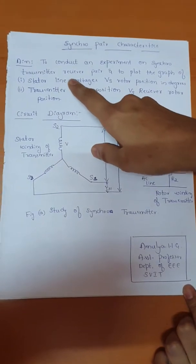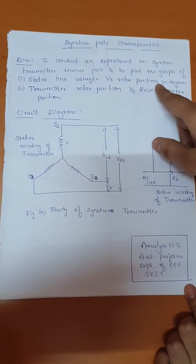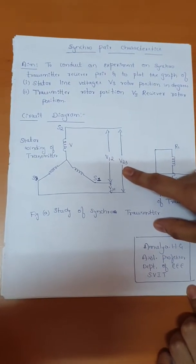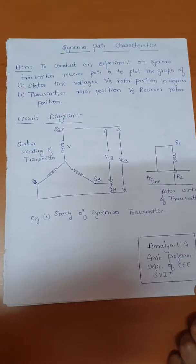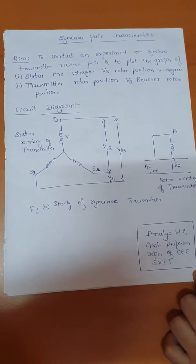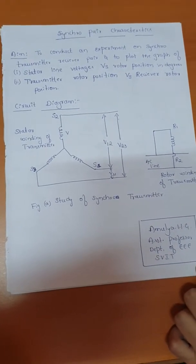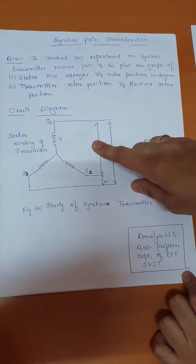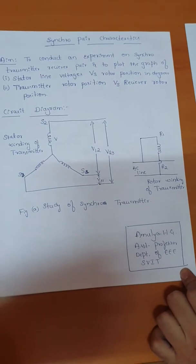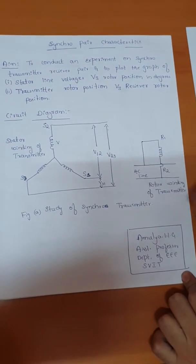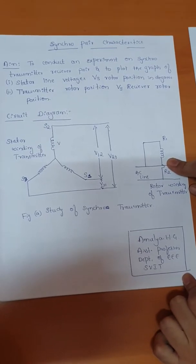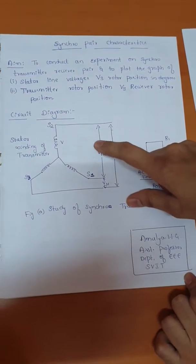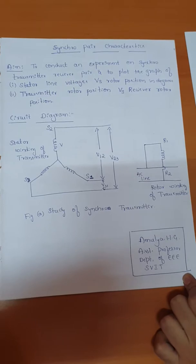For the first case, we need to plot the stator line voltage with respect to the rotor position in degrees. This is the circuit diagram for the first case, also acting as the synchro transmitter circuit diagram. The synchro transmitter is basically an electromechanical unit in which the mechanical signal — the input signal — is fed to the rotor and that will be converted into an electrical signal on the stator side. Here this is the rotor of the synchro transmitter.